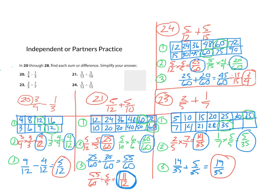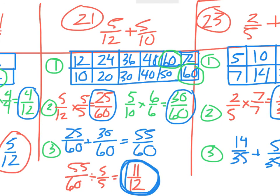Alright, and so here are your answers for independent or partner's practice. I want to zoom in specifically on 21. If you get done making this list here, and you have the least common multiple, and you're like, you know, I don't actually want to do the work again to find out 12 times what is 60.